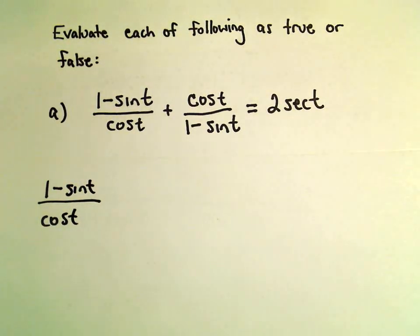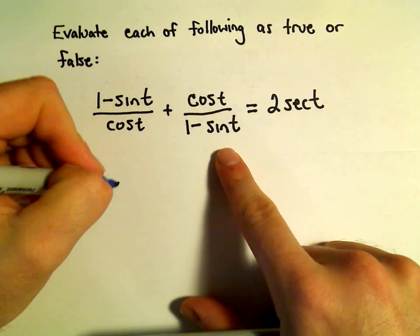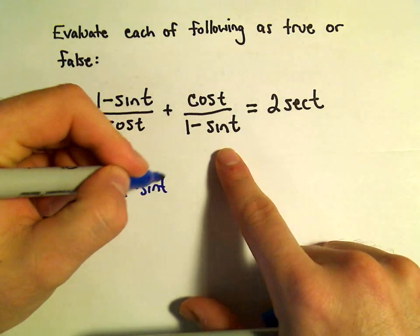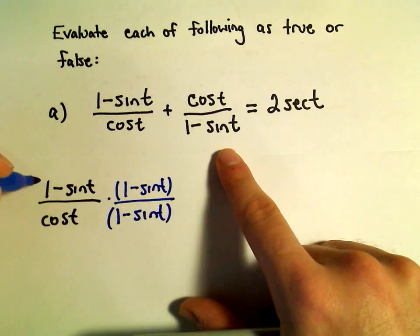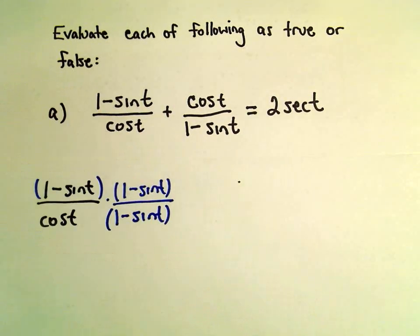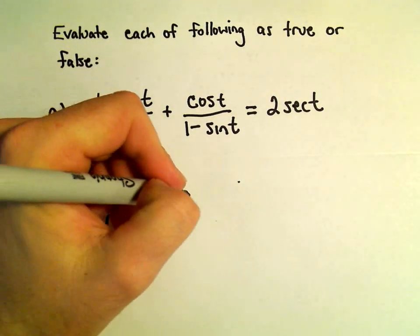Okay, so for our first fraction it looks like we would have to multiply the numerator and the denominator by 1 minus sine t. Plus, and then our second term.